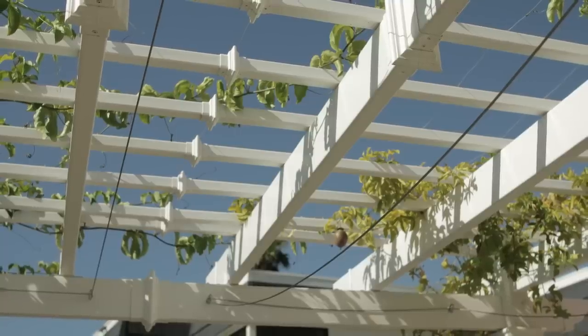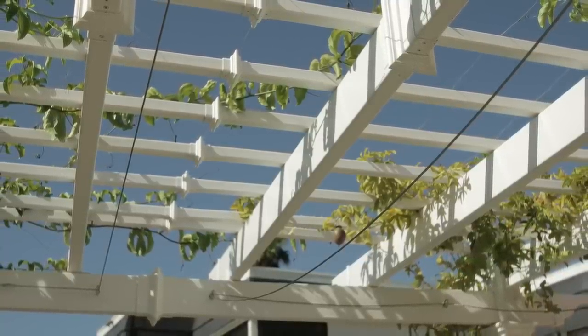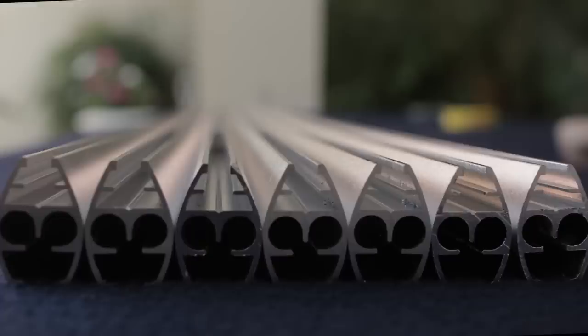With the cables in place, we are now ready to assemble the canopy. For this installation, we want to cover a 12x12 pergola with two rows of canopy. Each row requires 6 panels and 7 profiles.